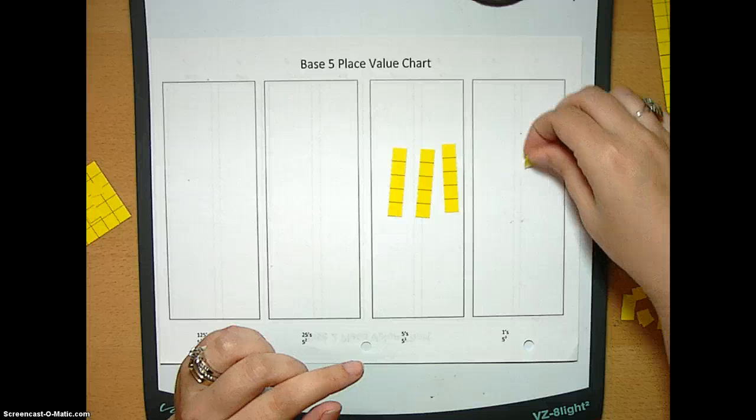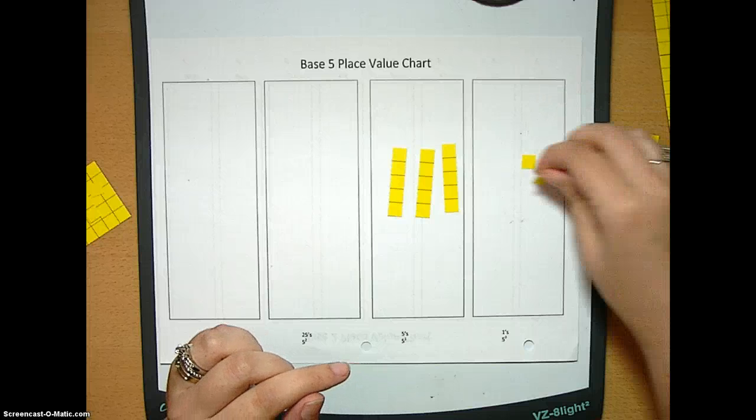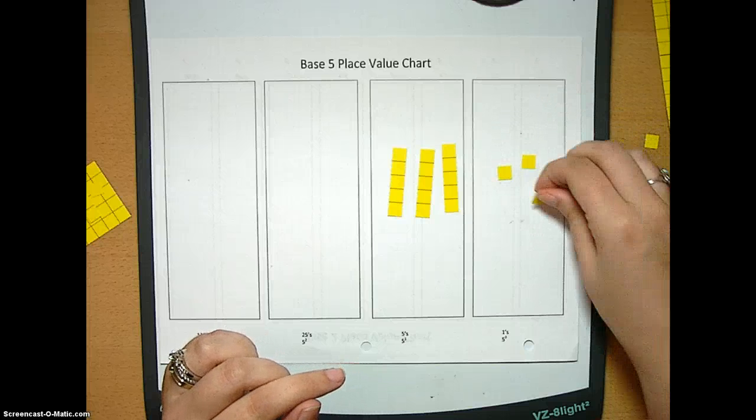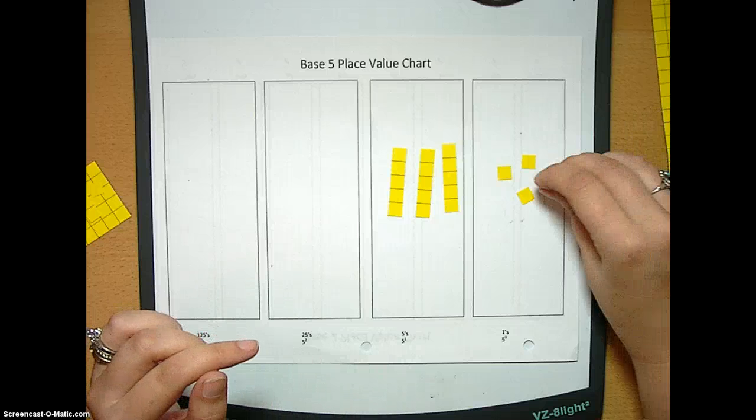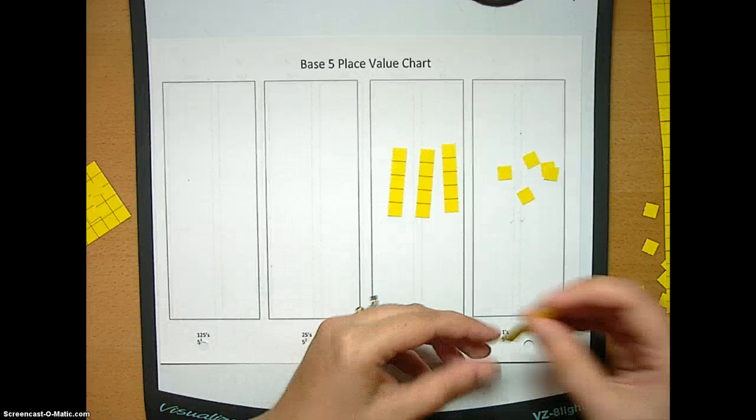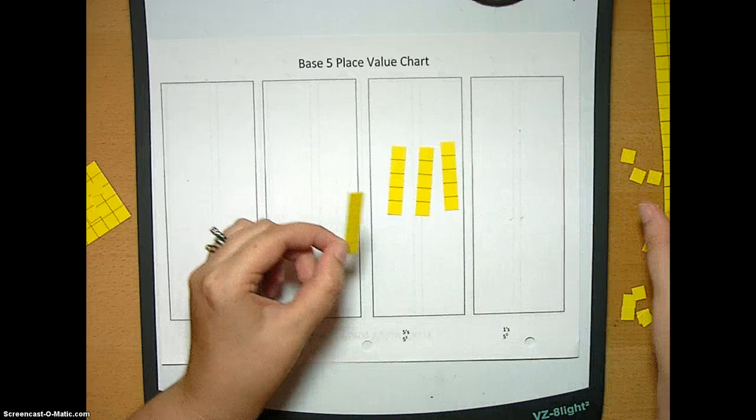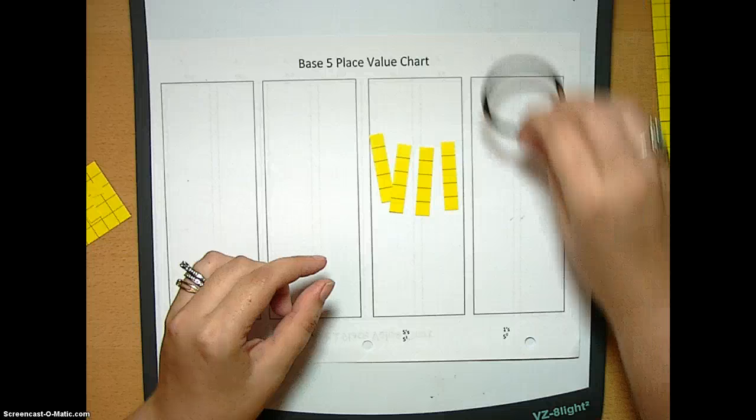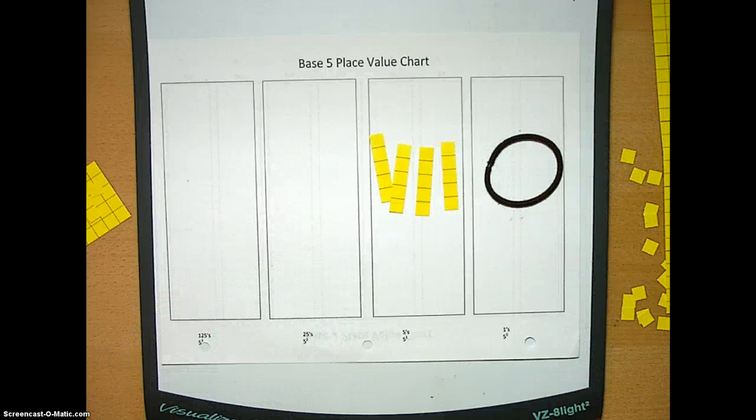Three, one base five. Three, two base five. Three, three base five. Three, four base five. Four, four base five.